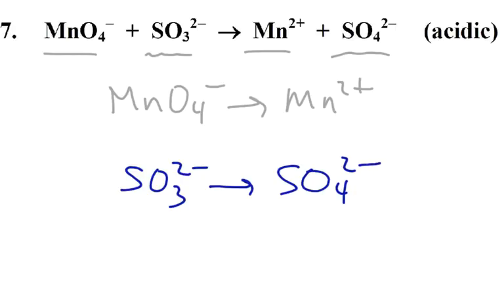We'll start with the manganese. First thing to do is to balance any atom that is not oxygen or hydrogen. So in the first case, that's manganese. We have one on each side, so that's good. Second thing, we want to balance our oxygens.